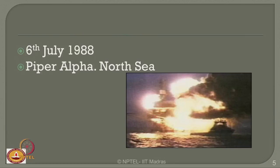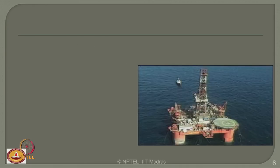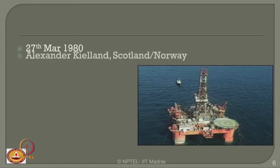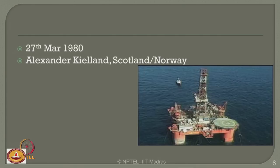On 6th July 1988, the Piper Alpha disaster happened in the North Sea — 167 people were killed and it resulted in a large fire. The second accident occurred on 27th March 1980 on the Alexander Kielland in Scotland and Norway. About 123 people working on board were killed; the bracing essentially collapsed — it was a structural failure.